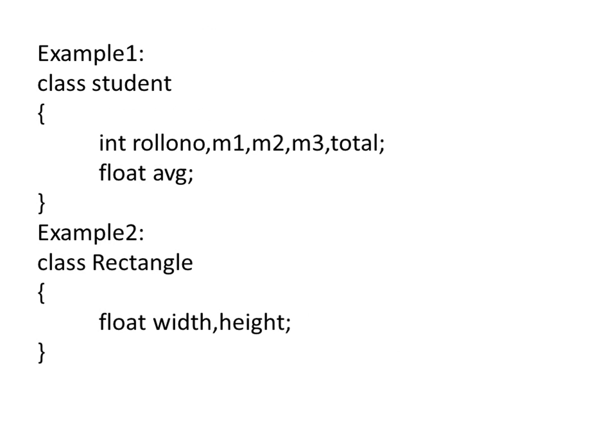Now let us see an example of how we have created a class. We have created a class called Student with the instance variables roll number, mark 1 (m1), m2, m3, and total, which belong to the built-in data type integer. If you want to calculate average, it will generally be in decimal point, so we declare it as float. So totally we have roll number, m1, m2, m3, total, and average as the instance variables of the class Student.